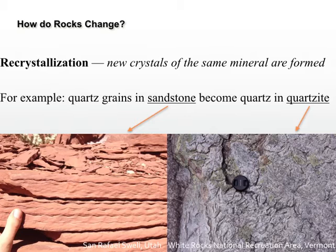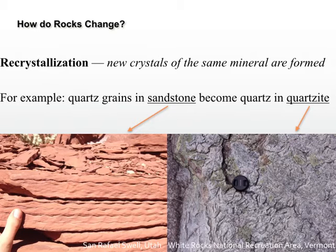We can also talk about recrystallization, where new crystals of the same mineral are formed. On the left we have a sandstone — you can tell because you can see those little ripples you might encounter at the beach. On the right, we have a quartzite. You might also notice rounded features on the surface of this bedrock, which are the conchoidal fracture characteristic of quartz. Here we had grains of quartz that are still chemically quartz, but they might have grown larger or become compacted — this is the process of recrystallization.